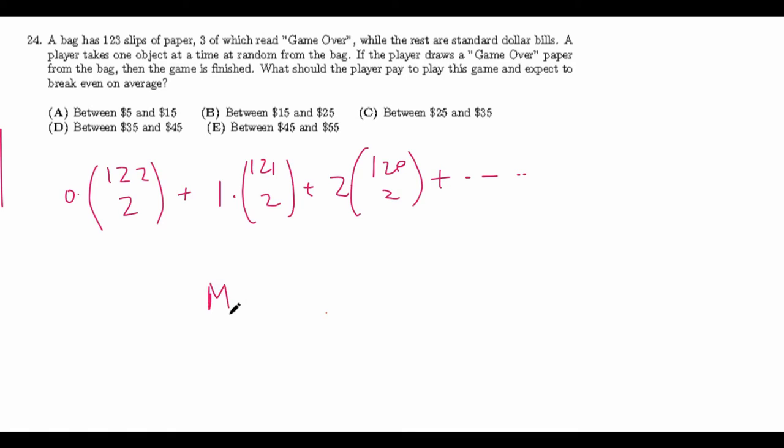The idea here is that if we draw slips one at a time from the bag it's the same thing as randomly ordering all the slips all in a line. For example let's say M is for money so money money money game over. For example ordering it all in a line and then our draw is basically just you draw the first one in the list then the second one on the list and then you keep on drawing until you get to a game over. So now the question is on average if you order 123 slips of paper three of which are game over and the rest are dollar bills randomly then when approximately will the first game over happen?